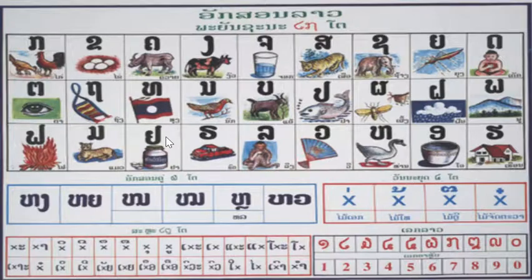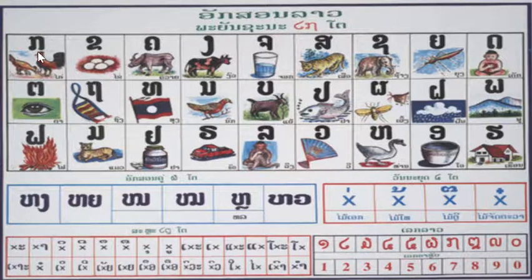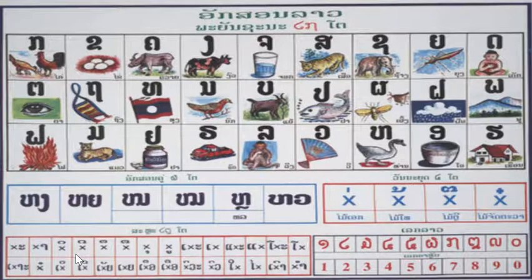Good morning. Today is lesson number two. Again, just want to recap the Lao alphabet from here. This is the combination tone indicator and this is a vowel helper.